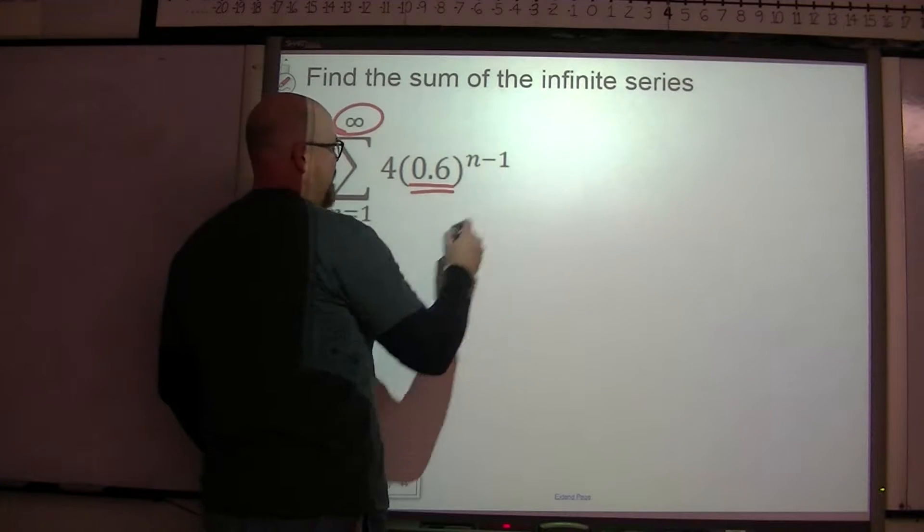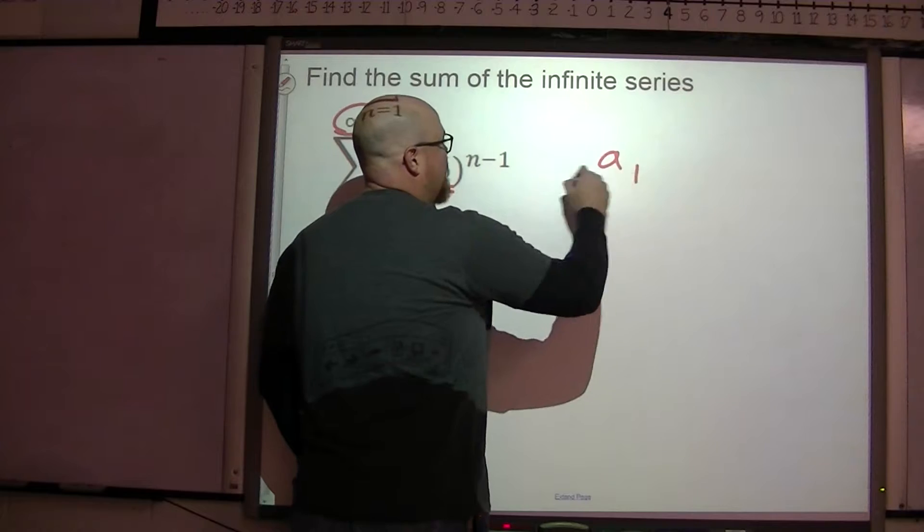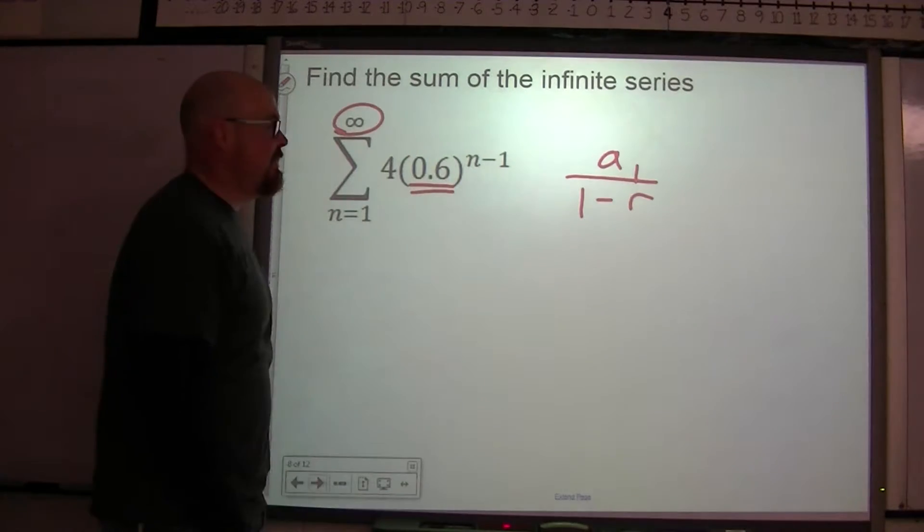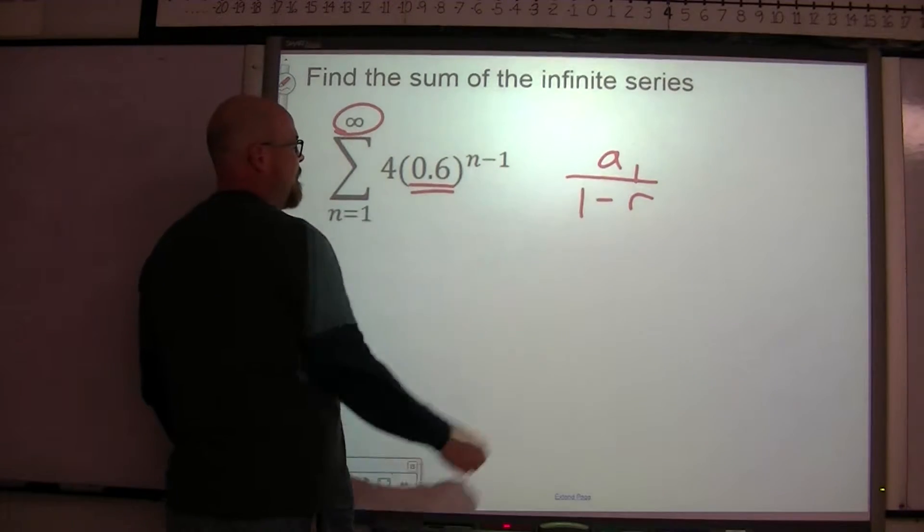We need to know, so the formula for this is a sub 1 over 1 minus r. Some quick calculations here. All we need to know is the first term.